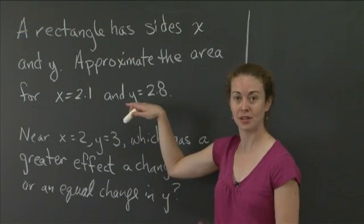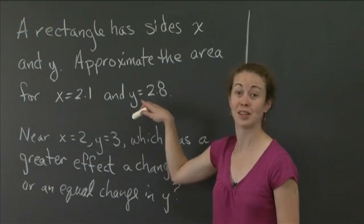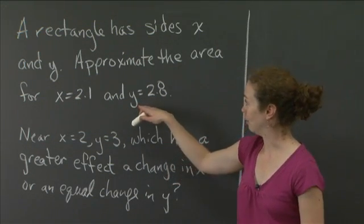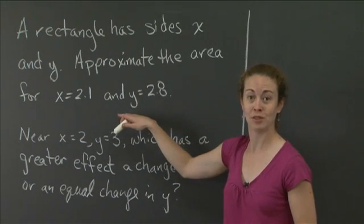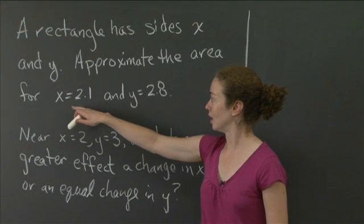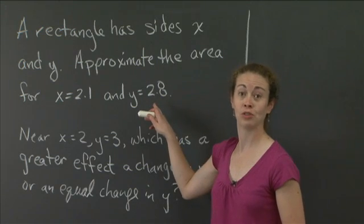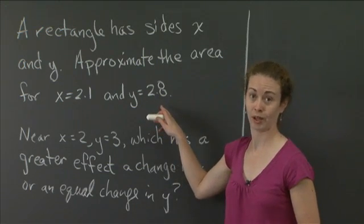But I'd like us to use the tangent plane approximation to determine the value, and then we'll compare it to the actual value, just to give us an idea of how we can use the tangent plane to approximate things. And obviously, I'd like to do this near x equal 2 and y equal 3. So when you're doing your tangent plane approximation, do the approximation at x equal 2 and y equal 3.